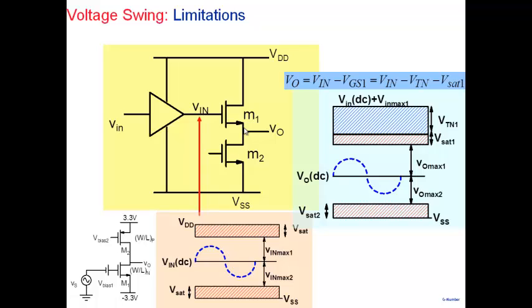Despite all the other advantages of the common drain amplifier — low output resistance, high linearity — it does not provide adequate swing. It is for this reason that the common drain amplifier is often not used as an output stage.